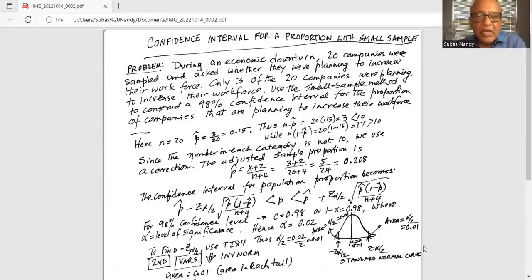So p-hat now becomes 3 plus 2 divided by 20 plus 4. So now it is 5 over 24, and it is 0.208.